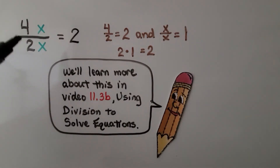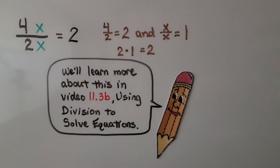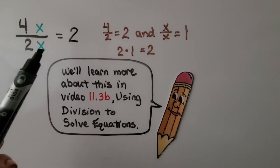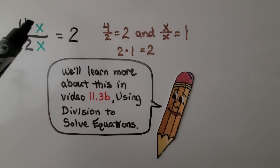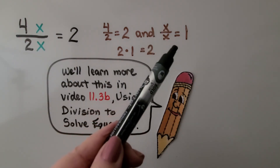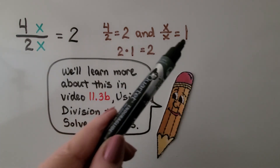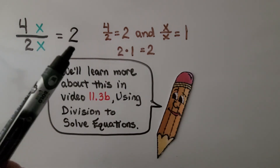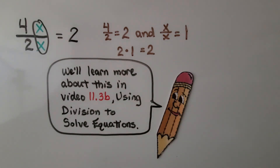Here we have 4x divided by 2x. We do 4 divided by 2, which equals 2, and x divided by x. It doesn't matter what x's value is — if x is 5, that's 5 over 5; if it's 2, it's 2 over 2. So x over x equals 1, because we have the same numerator and denominator. That means 4 divided by 2 is 2, times 1 is 2. We'll learn more about this in video 11.3b, using division to solve equations.